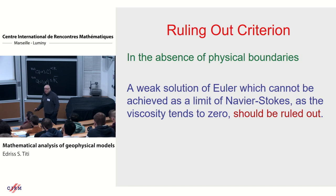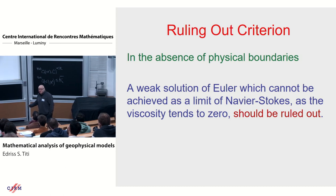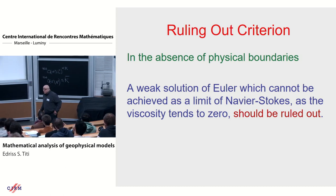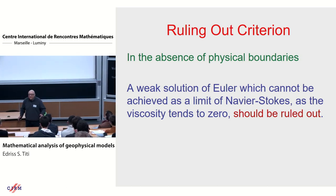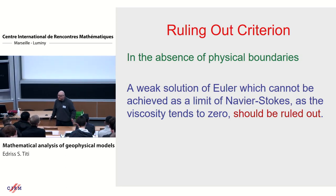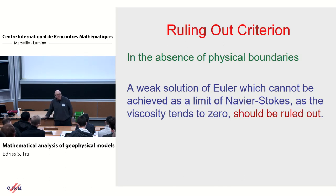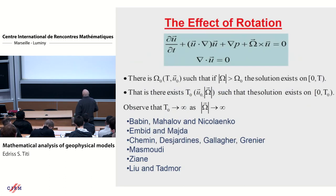I'm talking about without physical boundaries — mathematically. If I have physical boundaries, even in two dimensions, we still do not know if Navier-Stokes converges to Euler because of boundary layers. I don't want to talk about that — I'm disconnecting boundary effects.